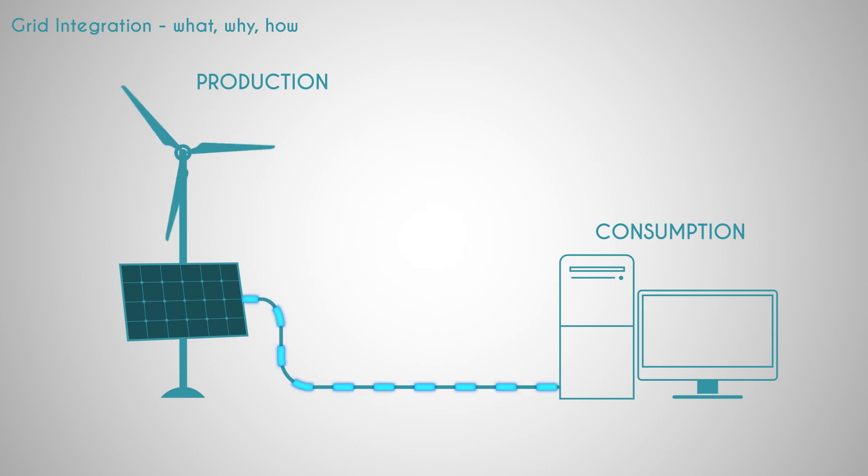In the circumstance where supply exceeds demand, devices will be overloaded and have to be disconnected to avoid heavy damage. If demand exceeds supply, there is of course not enough electricity to power all connected appliances. This would be inconvenient to watch this video and it would have much deeper consequences for a hospital for instance.